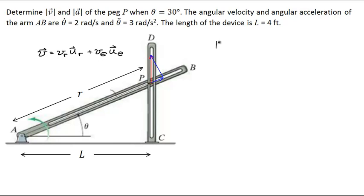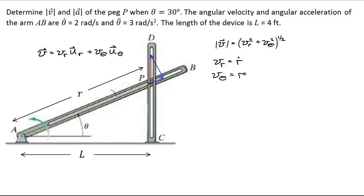The magnitude of this velocity is simply the square root of vr squared plus v-theta squared. Here, vr is given by the simple relationship vr equals r-dot, and v-theta is equal to r times theta-dot.